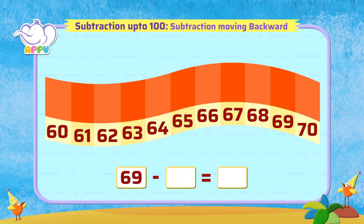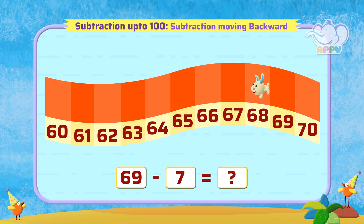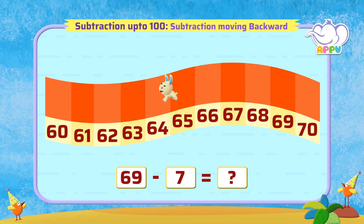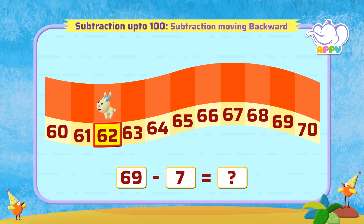69 minus 7. Count backwards by 7, which is 68, 67, 66, 65, 64, 63, 62. 62 is the answer. That's better than ever!